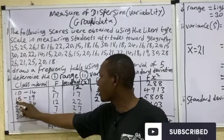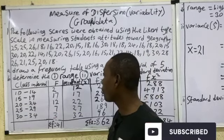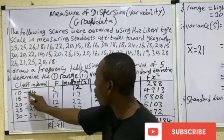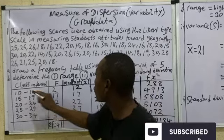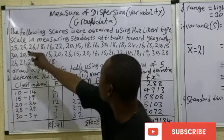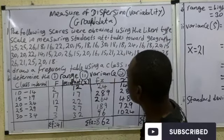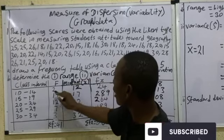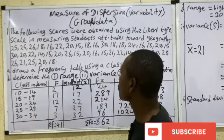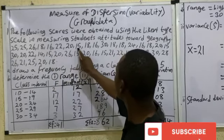Now count the numbers that fall within each range. For 10 to 14, you look through the values and find a frequency of 2. For 15 to 19, you look through and count the values that fall in that range.